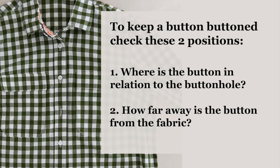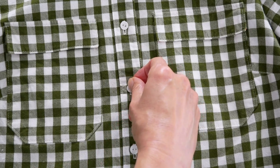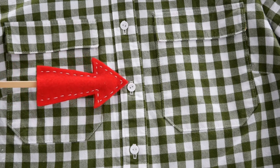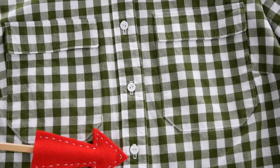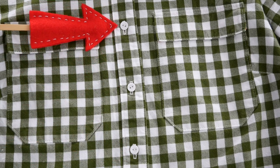So let's talk about button placement. There's two things you need to keep in mind: where is the button in relation to the buttonhole and how far off the button is from the fabric? I think our natural inclination is to put the button down in the center of a buttonhole like this, when actually you want the button to overlap part of the garment and not just be in the center of a buttonhole.